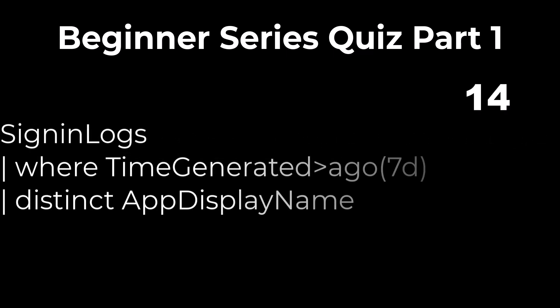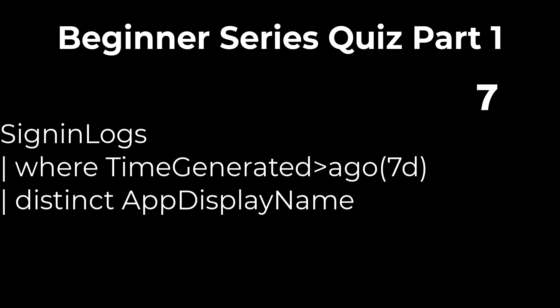Problem 5: The output of this query will be in alphabetical order from A to Z. Distinct produces unique values from the field or fields identified, but distinct does not sort the output. The answer is false.